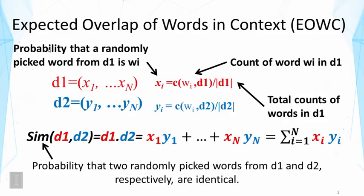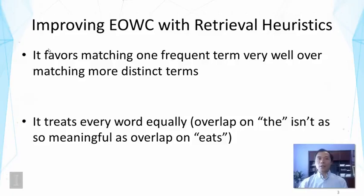And we measure the similarity by using the dot product, which can be interpreted as the probability that two randomly picked words from the two contexts are identical. We also discussed the two problems of this method.